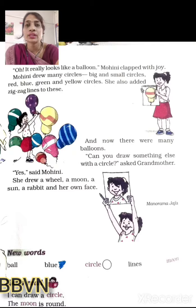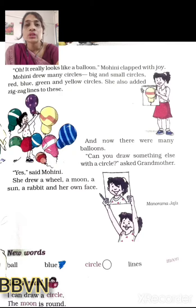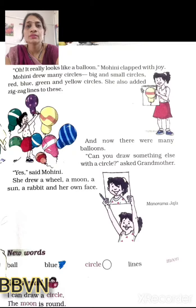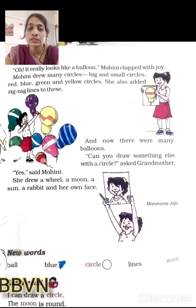Yes, said Mohini. Mohini ne kaha haan, main aur bhi bahut kuch bana sakti hoon. She drew a wheel, a moon, a sun, a rabbit, and her own face. So Mohini ne us circle se bahut saari cheezein banayi — wheel, moon, sun, rabbit, and her own face. So hum circle se bahut saari cheezein bana sakte hain.